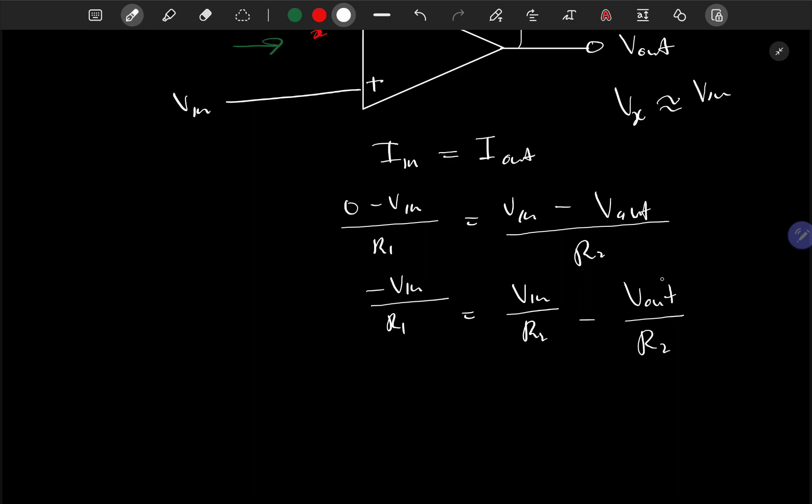Now I'm trying to solve for Vout, so I'll move it to one side. Taking Vout to the left side gives Vout/R2 = Vin/R1 + Vin/R2.